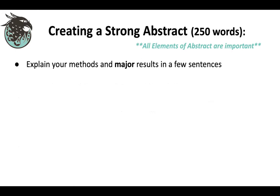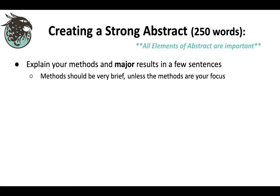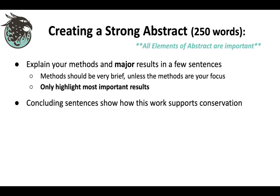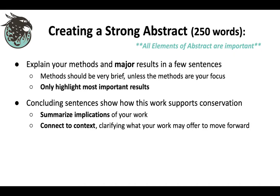The next piece is to explain your methods and major results in just a few sentences. Methods should be very brief unless that's the focus of your presentation. Only highlight the most important results — one of the most common mistakes is to talk in too much detail about too many different things. Your conclusion really matters: how does this work support conservation, and how does it tie back to that first sentence? Summarize the implications, connect it to the context, and clarify what your work might offer to others.